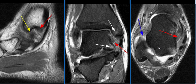The anterior talofibular ligament is also torn, with a stump of torn tissue seen anteriorly on this image with blue arrow.